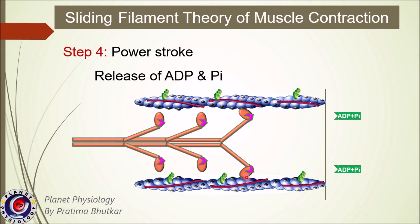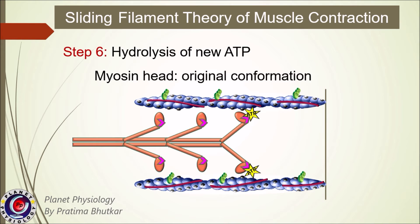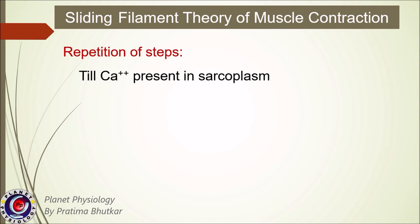As a result, myosin heads bend towards the center of the sarcomere — this bending is called the power stroke. This power stroke pulls the actin filaments along with them. A new molecule of ATP then attaches to the myosin head, causing it to detach from actin. So, for detachment of myosin heads from actin, ATP is required. ATPase activity in the myosin head immediately hydrolyzes this ATP, bringing the head back to its original perpendicular conformation. As the active sites are still uncovered, the myosin head will attach to a new active site further along the actin filament, followed by another power stroke. These events are repeated again and again as long as calcium ions are available in the sarcoplasm.